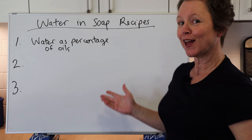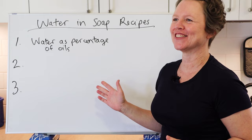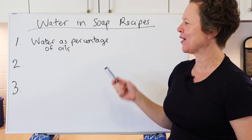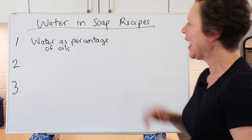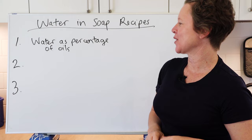I got a whiteboard — I tried to find all these high-tech ways to write stuff out, but honestly this is the easiest and most natural way. Anyway, the second way that water is calculated for soap recipes is to use the water-to-lye ratio method.